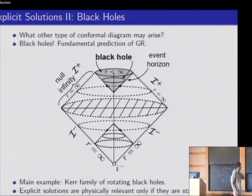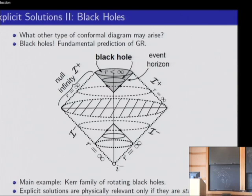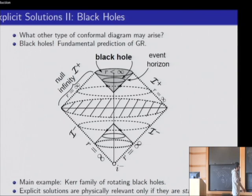The main family of black hole solutions is the so-called Kerr family of rotating black holes. The existence of spacetimes containing black holes is not really telling us something important unless we can prove that these solutions are stable, because if they are unstable then these objects are pathological and we should not expect to observe them in the universe. The Kerr family has two parameters: mass and angular momentum.